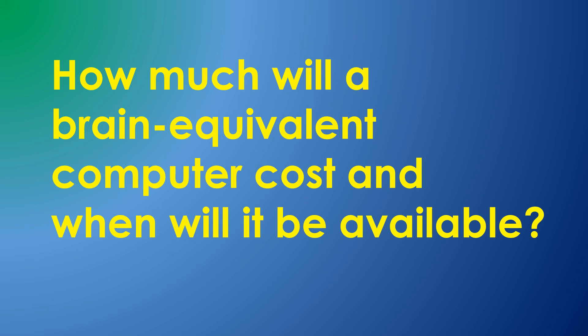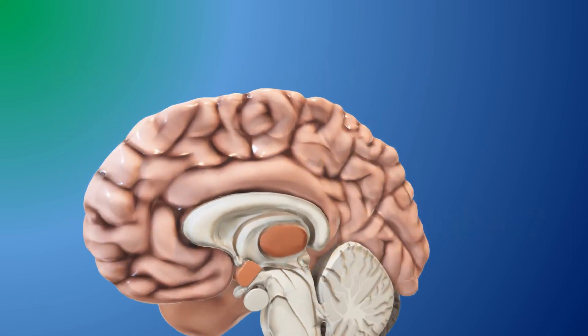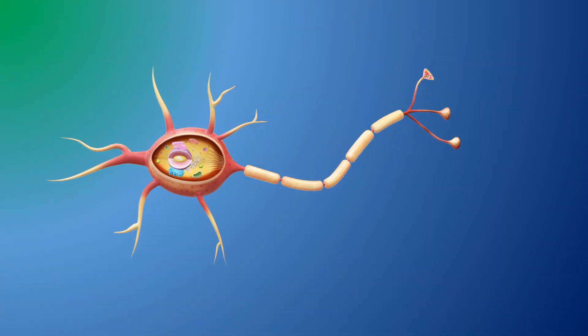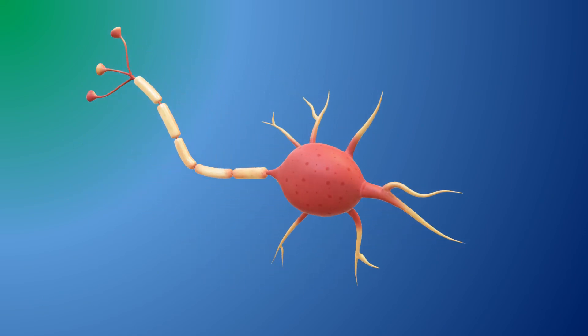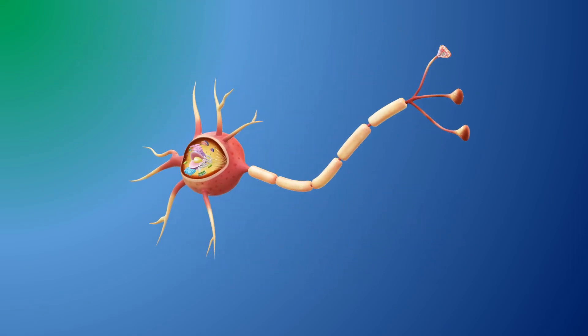In the last video, I described the basic function of a neuron. In this one, I'll explore what it takes to implement a brain-level set of neurons on a computer. In the next video, I'll get back to the functionality needed for AGI.